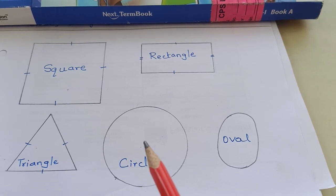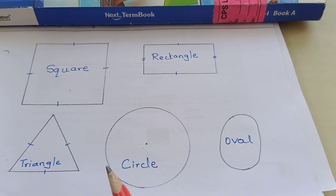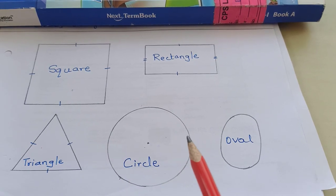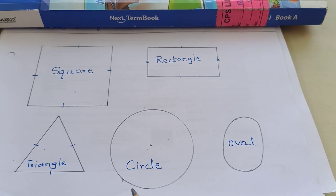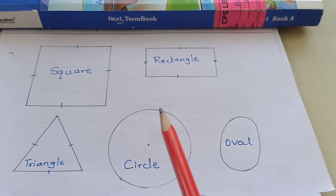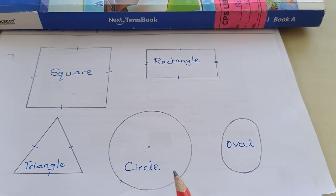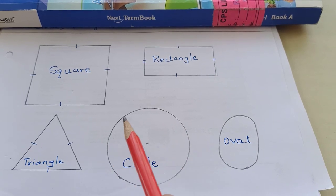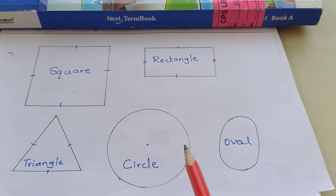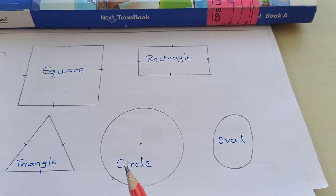A circle. Can you see any sides here or corners here? No. So a circle does not have any sides or any corners.